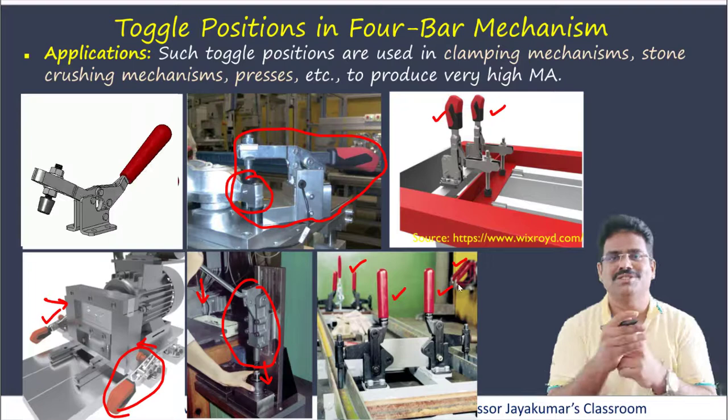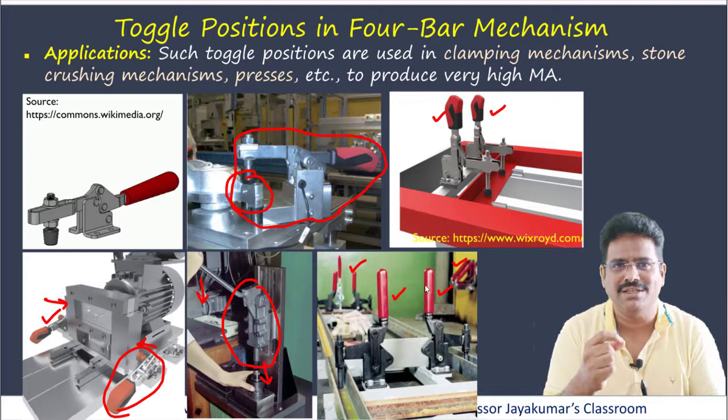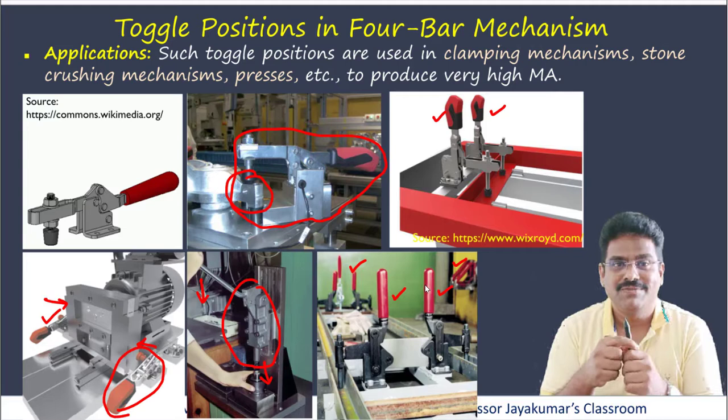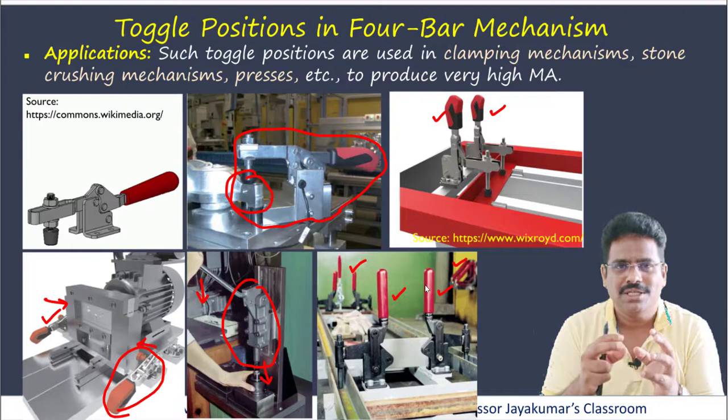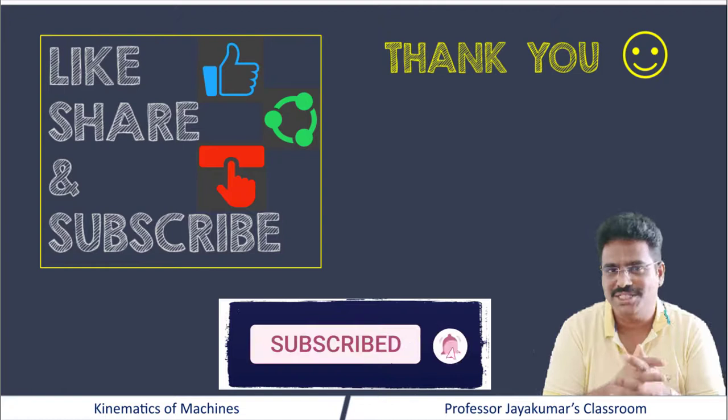We should remember four key positions of a 4-bar mechanism: when theta equals 0 degrees and theta equals 180 degrees, we get minimum and maximum transmission angles respectively; and when beta equals 0 degrees and beta equals 180 degrees, we obtain the two toggle positions where mechanical advantage is infinite. Please support the work by liking the video, sharing it with your friends, and subscribing to the channel. Thanks for watching.